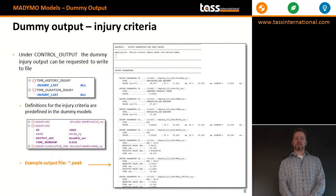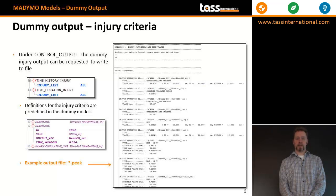Also under the control output element, injury criteria can be requested. Definitions for all of the injury criteria of the major protocols are already contained in the dummy include files. These are written to the peak file.